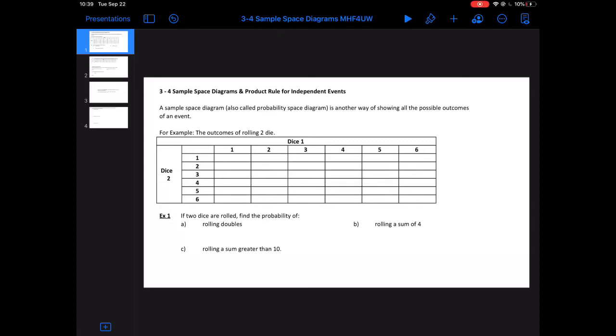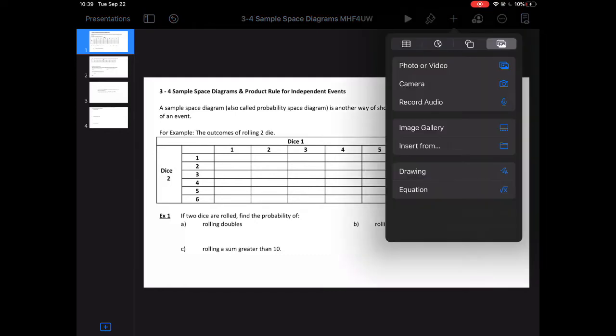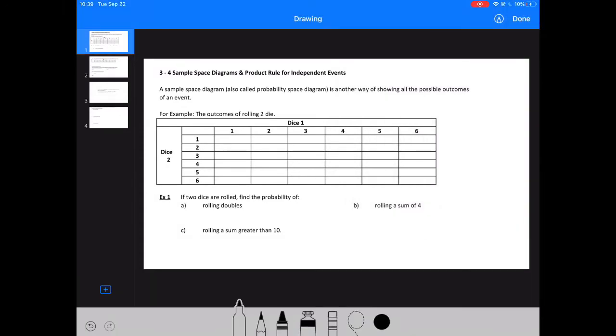This video goes over sample space diagrams, which is just another way to organize the outcomes of an experiment different than a Venn diagram. A sample space diagram, which is also called a probability space diagram, is just another way of showing all the possible outcomes of an event. You can list all the probabilities as long as there aren't too many. For example, this is a sample space diagram of the outcomes of rolling 2 die.